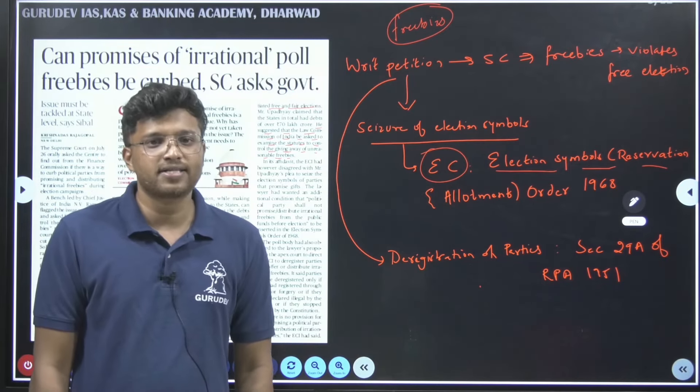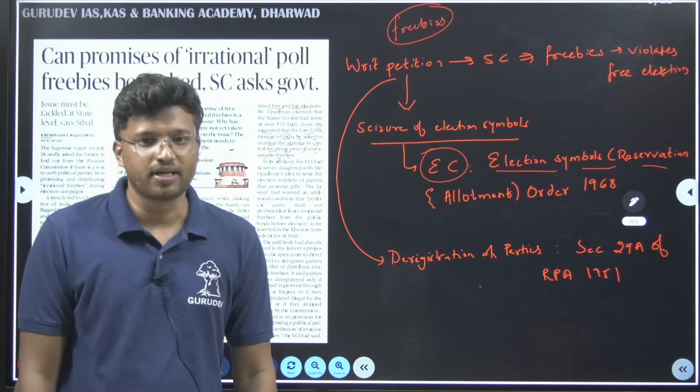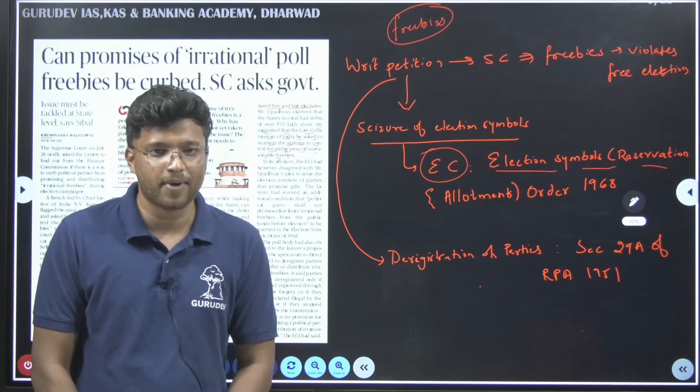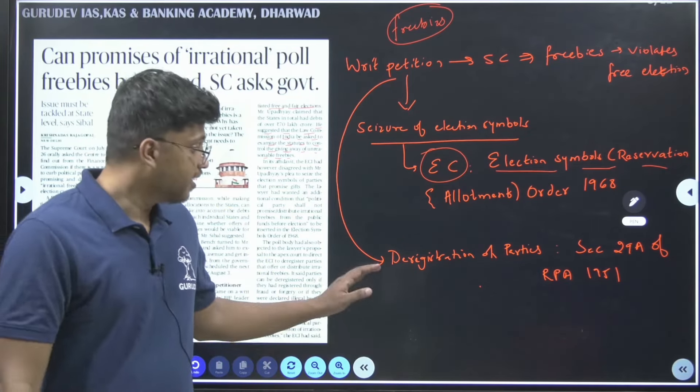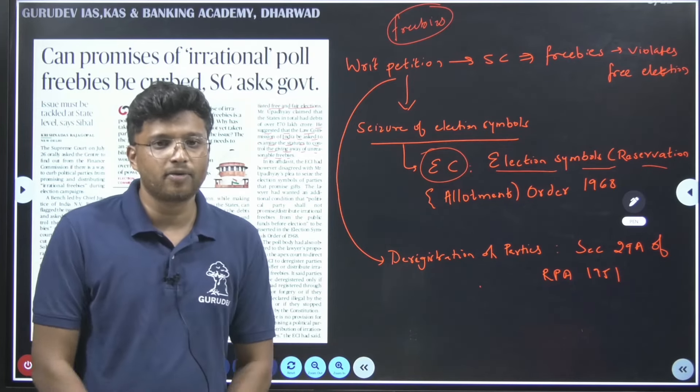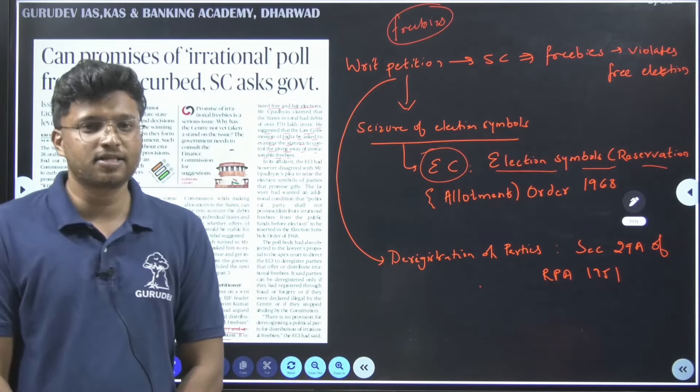The petitioner also asks for deregistration of parties which are providing freebies. This power is exercised by the Election Commission. If any party is registered as a national party or a state party, it can be deregistered by the Election Commission under Section 29 of the Representation of the People Act, 1951. The Supreme Court has asked the government whether the promise of freebies is irrational and should be stopped. The matter has been referred to both the Finance Commission and the Law Commission.